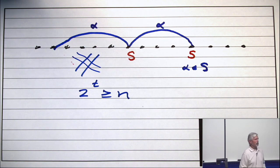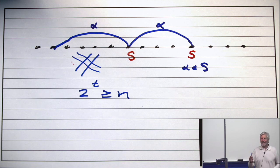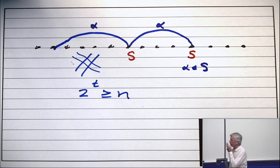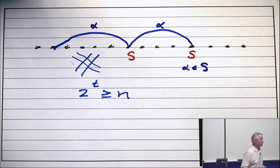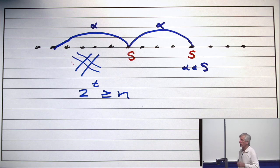So, we're halfway done. You need at least the number of colors. If t is the number of colors, 2 to the t has to be greater than or equal to n. Now, to complete the explanation, we have to show that if t satisfies that inequality, then you can color it with t colors.